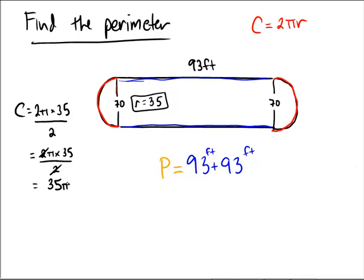And so when I come over to my formula here, I'll have plus 35 pi for one of the semicircles, feet, plus 35 pi for the other semicircle.